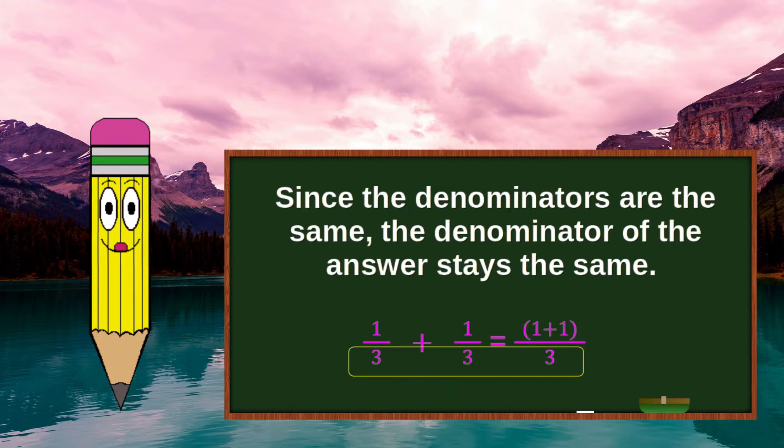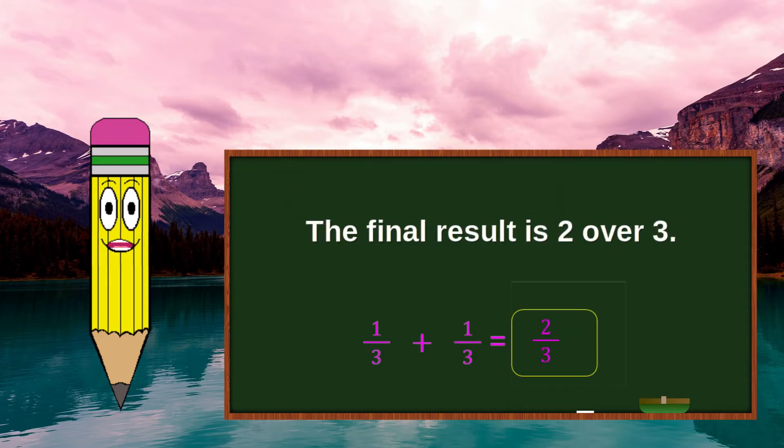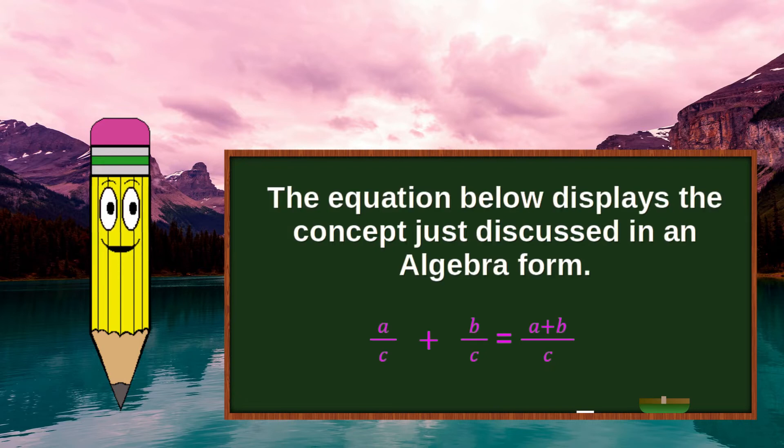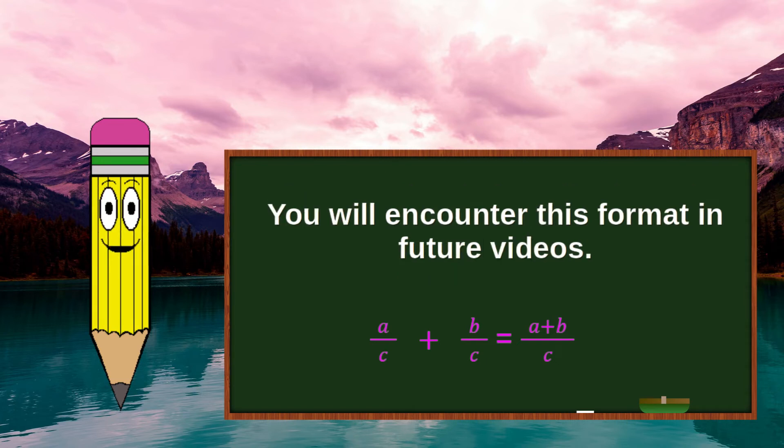Since the denominators are the same, the denominator of the answer stays the same. The final result is 2 over 3. The equation below displays the concept just discussed in an algebra form. You will encounter this format in future videos.